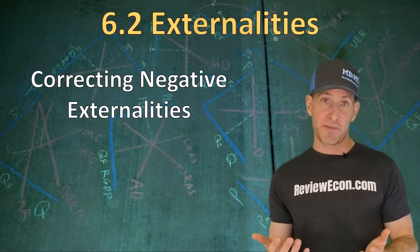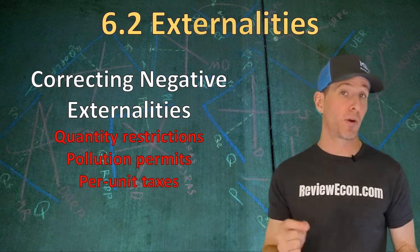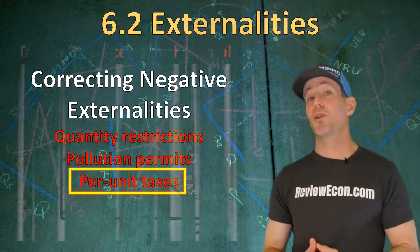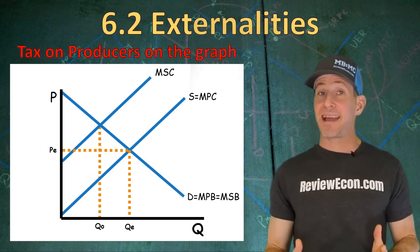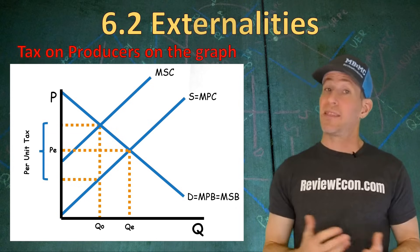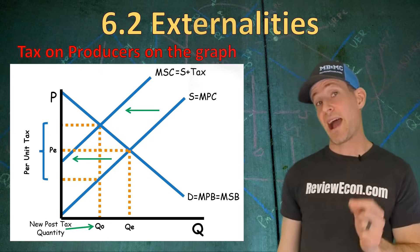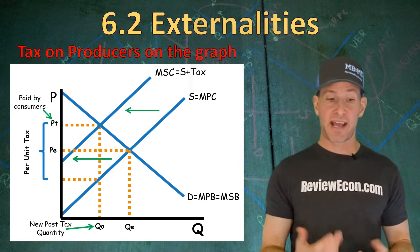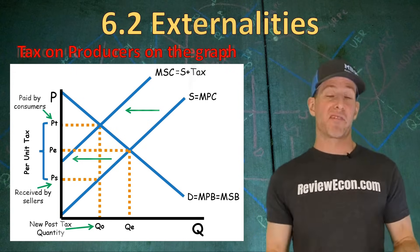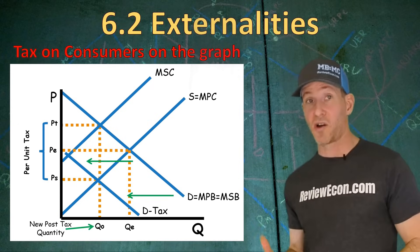When it comes to correcting for negative externalities, the government needs some intervention. The government could place quantity restrictions, issue pollution permits, or levy a per unit tax on this product. For the AP Microeconomics exam, the preferred method is a per unit tax. When we place that per unit tax on producers — equal to the marginal external cost, which is the gap between the marginal social cost and the marginal private cost curves — that will shift the supply curve up by the vertical distance of that tax, making supply plus the tax equal to the marginal social cost curve. QO becomes our after-tax quantity; PT is the price consumers pay, and PS is the price producers receive. That per unit tax will eliminate deadweight loss if it equals the marginal external cost. The government could also place the tax on consumers, shifting the demand curve instead — either way, QO will be our new after-tax quantity.